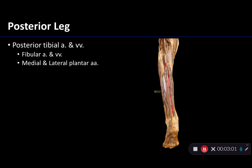The posterior tibial artery ends at a bifurcation at the calcaneus, where it becomes both the medial and the lateral plantar arteries. It is the lateral plantar artery that feeds directly into the plantar arterial arch — that is the contribution to the plantar arterial arch from the posterior tibial artery.